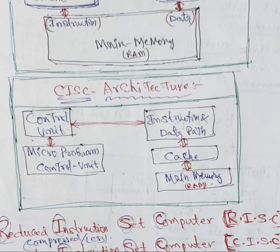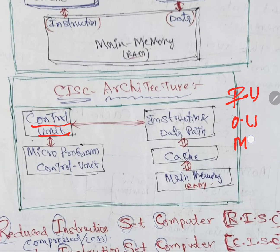Now we are going to see CISC architecture. CISC architecture has a Control Unit, which controls all operations. We have five units: Input unit, Output unit, Memory unit, Control unit, and ALU — actually ALSU, which stands for Arithmetic Logic and Shift Unit.